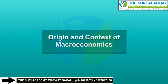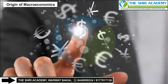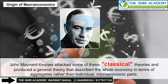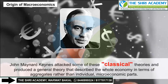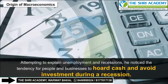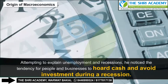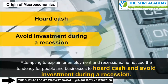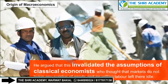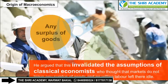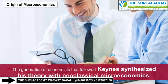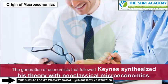Origin and Context of Macroeconomics. John Maynard Keynes attacked some of these classical theories and produced a general theory that described the whole economy in terms of aggregates rather than individual microeconomic parts. Attempting to explain unemployment and recessions, he noticed the tendency for people and businesses to hoard cash and avoid investment during a recession. He argued that this invalidated the assumption of classical economists who thought that markets do not leave any surplus of goods and no willing labour left idle. The generation of economists that followed Keynes synthesized his theory with neoclassical microeconomics.